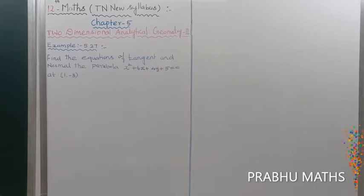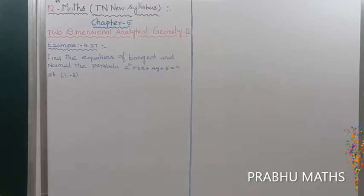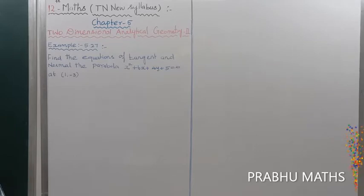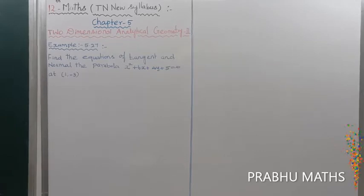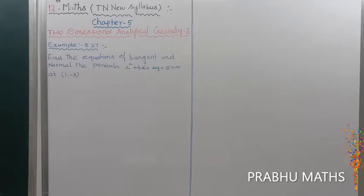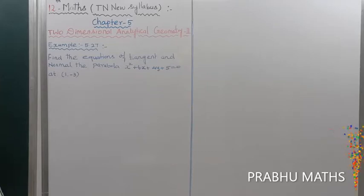Example 5.27: Find the equation of the tangent and the normal to the parabola x² + 6x + 4y + 5 = 0 at the point (1, -3).